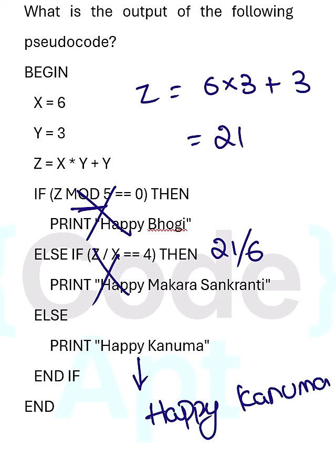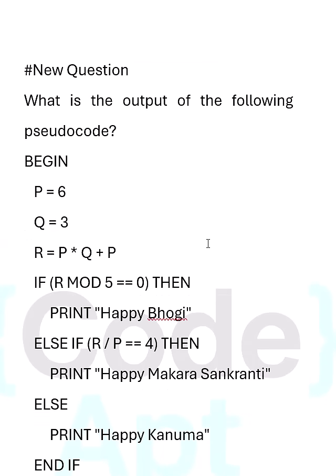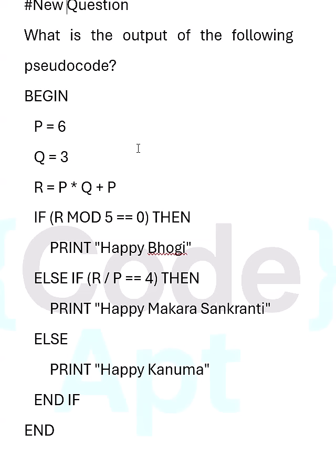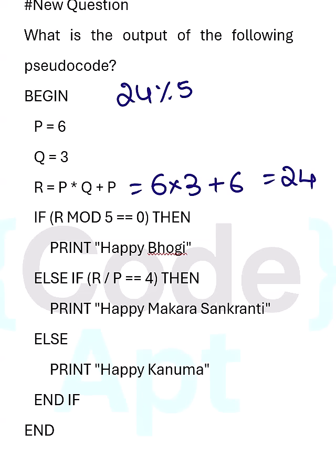Next question in a similar fashion related to pseudo codes. Here P is given as 6, Q equals 3. R is updated as P into Q plus P, which is 6 times 3 plus 6, giving 18 plus 6 equals 24. Now 24 mod 5 — the remainder is 4, not equal to 0, so this won't display. But 24 divided by P, where P is 6, gives exactly 4. This condition is satisfied.